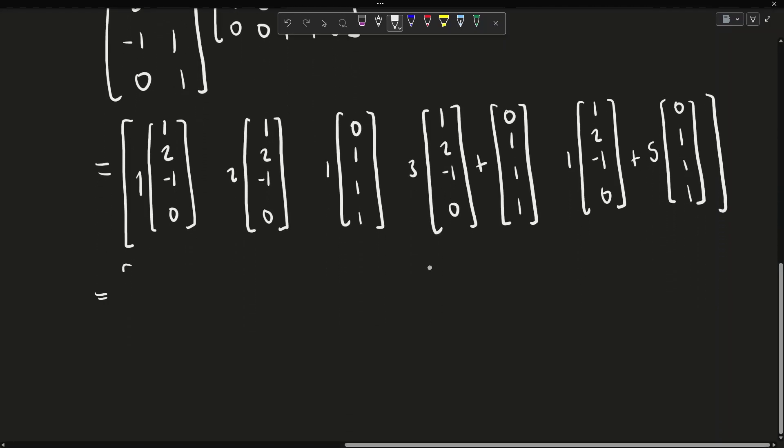Expanding this out, we have the first column is [1, 2, -1, 0]. The second column is [2, 4, -2, 0]. The third column is [0, 1, 1, 1].